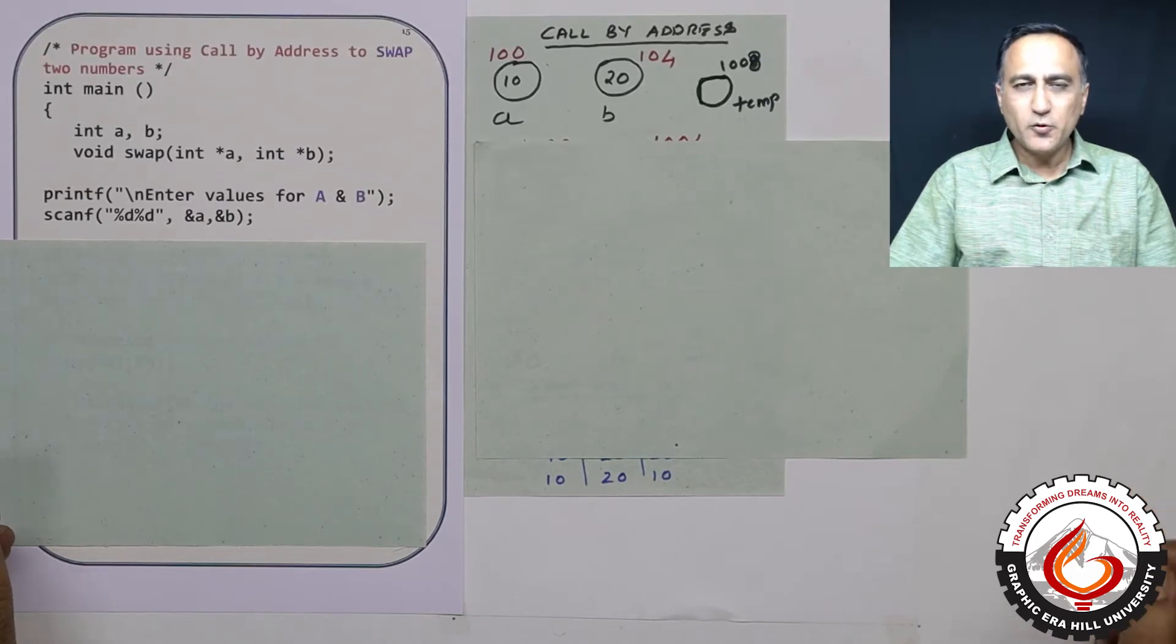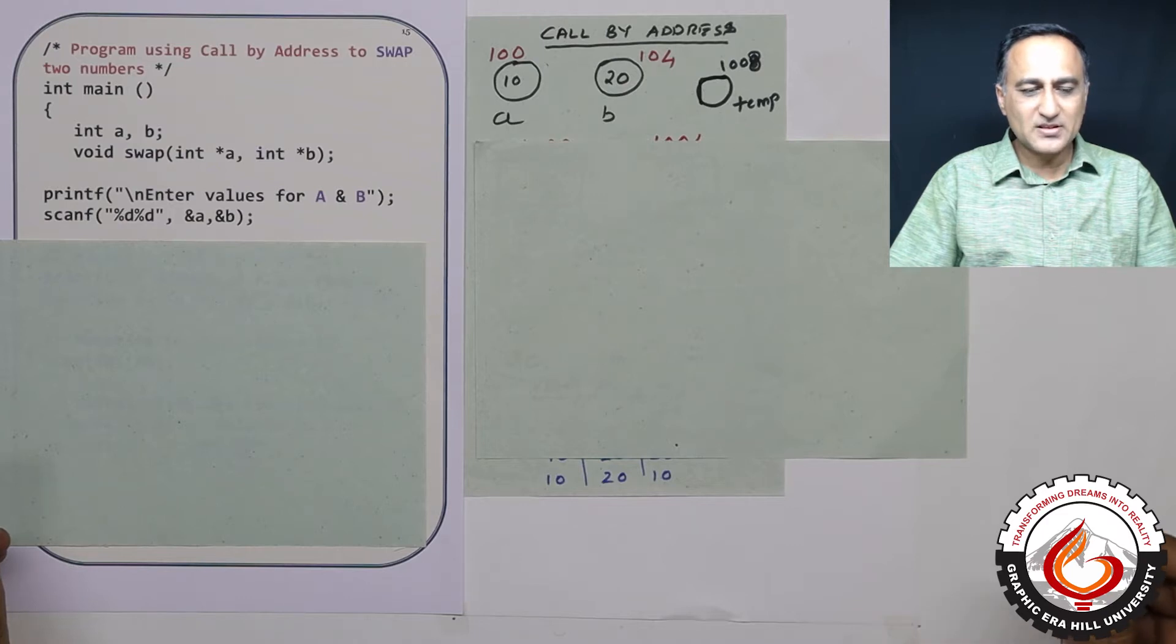I am now going to do the program using something called call by address to exchange the values of two numbers.